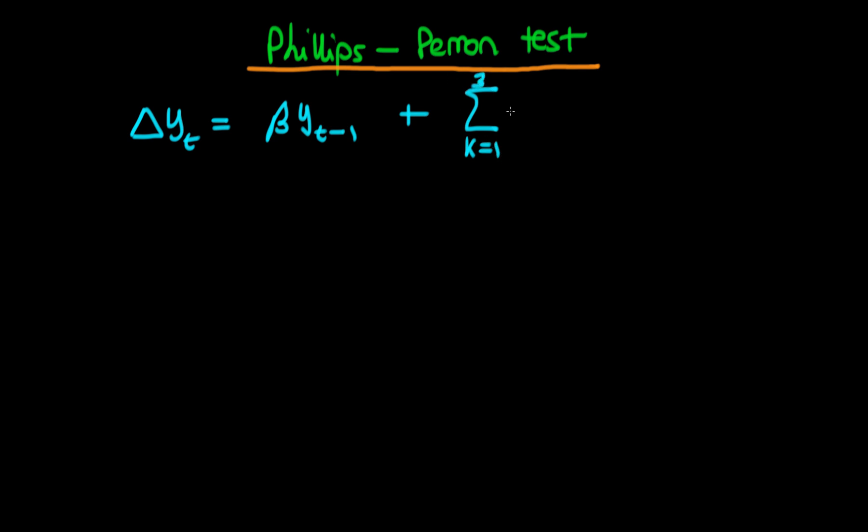You might specify that you want the first three lags of the first difference of y. So that would be the sum from k equals 1 to 3 of some coefficient gamma k times the first difference of y_t minus k plus some error epsilon t. This is the augmented Dickey-Fuller test, and the idea behind adding these lags is to correct for the presence of serial correlation in the auxiliary regression.